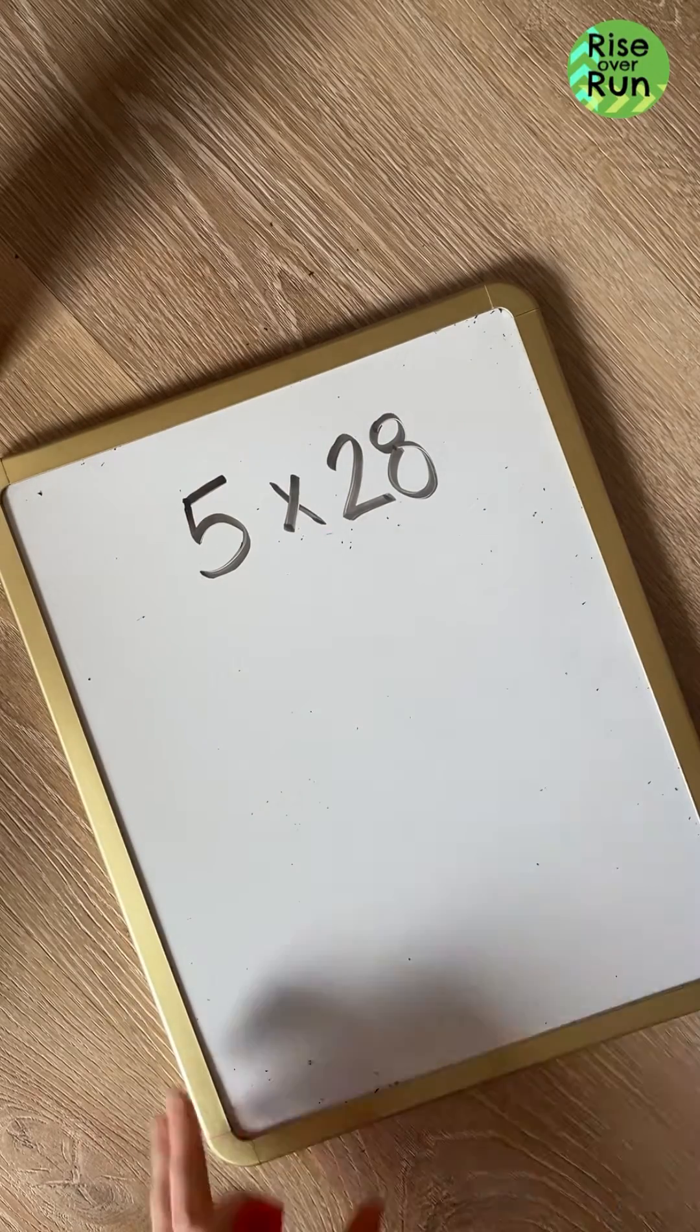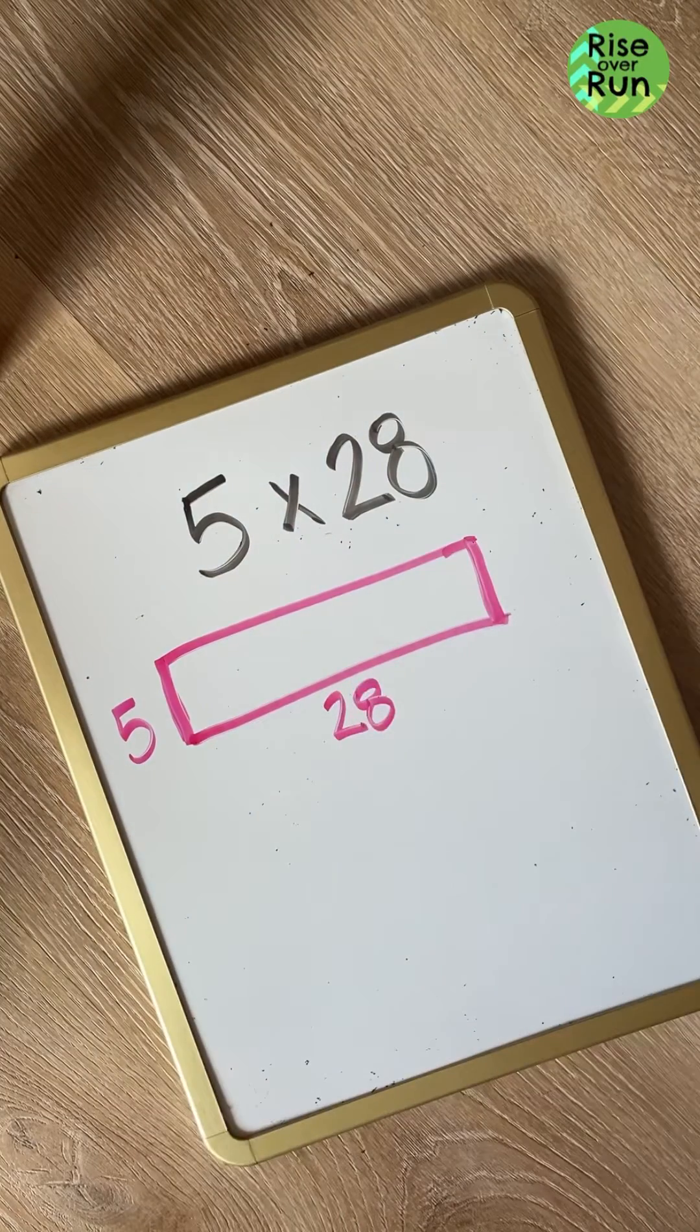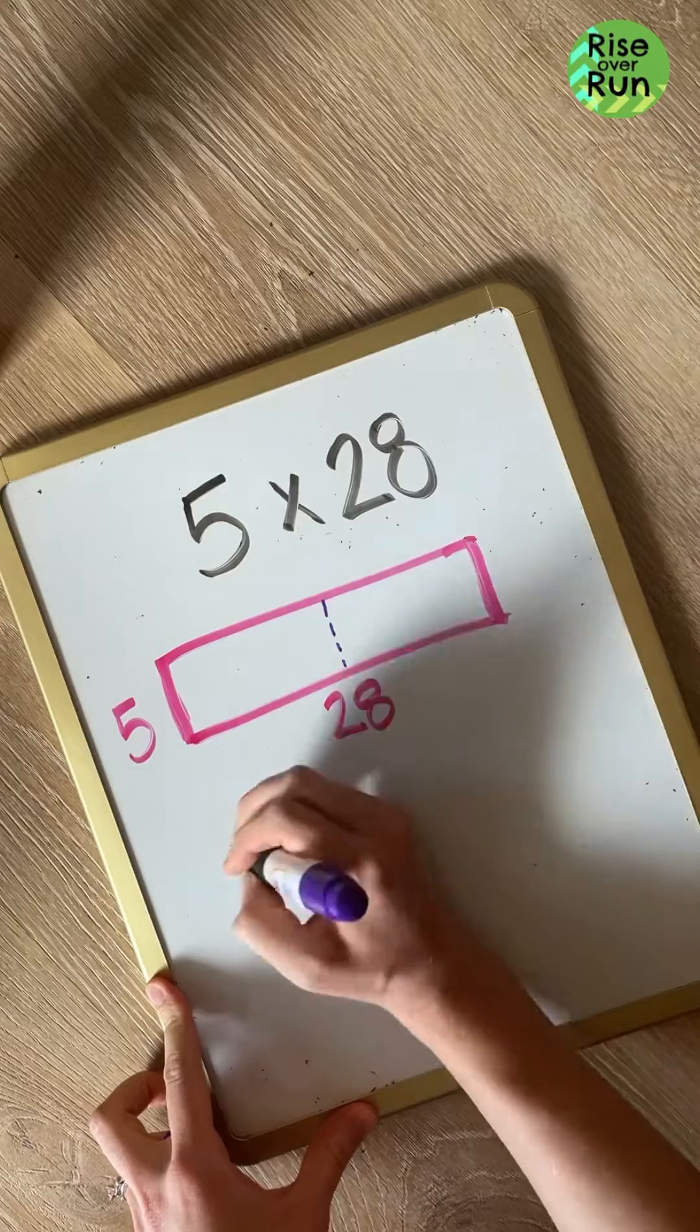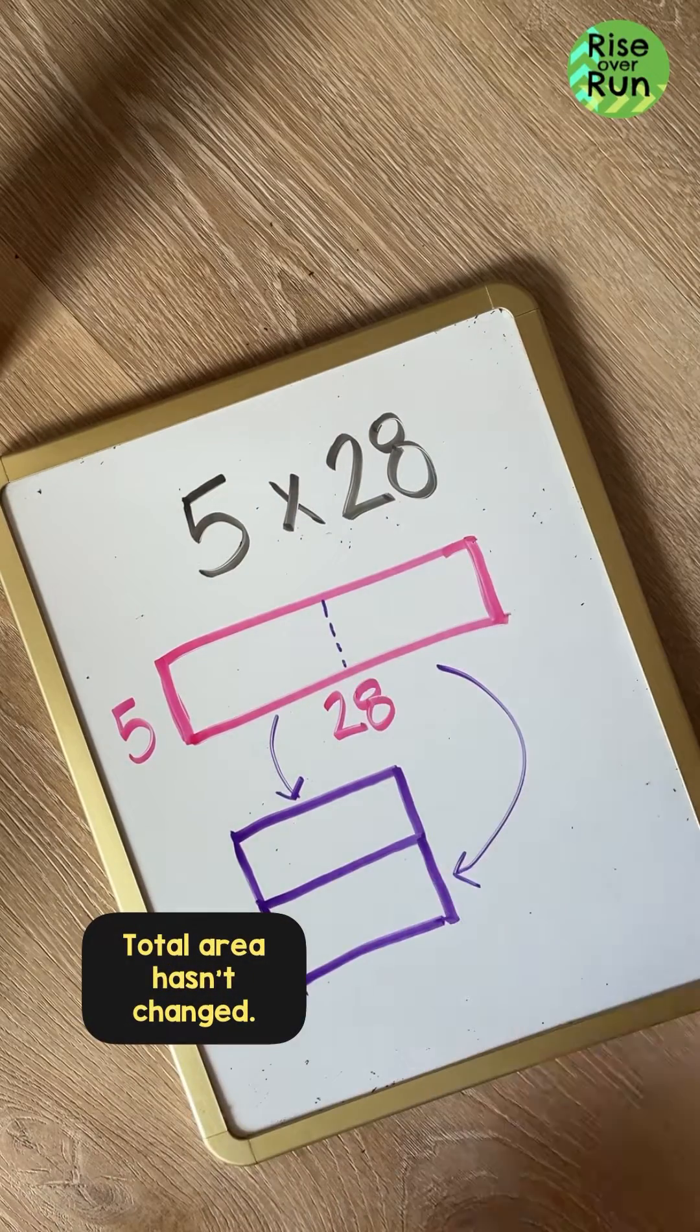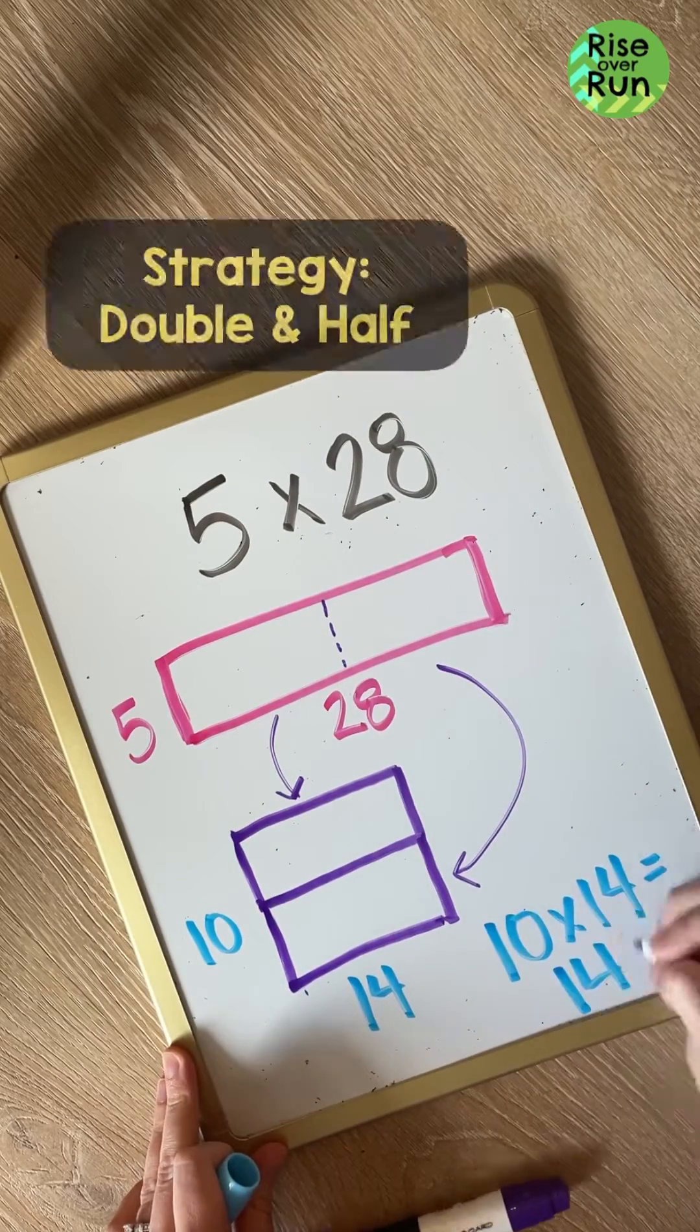Now watch this next strategy happen. With our area model, we're looking for this total area. So if I don't know what it is, I can manipulate it a little bit and I'm going to cut it in half. Now notice I rearrange these two rectangles, but I haven't changed the total area. What I've done is doubled one dimension and split the other in half.